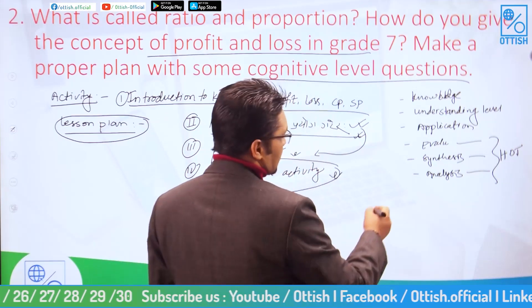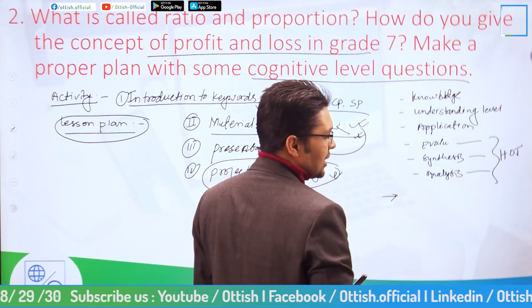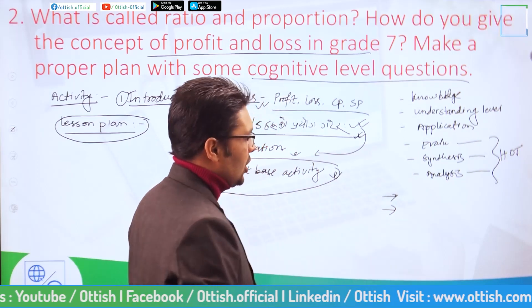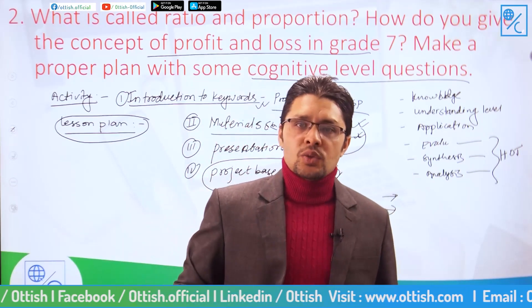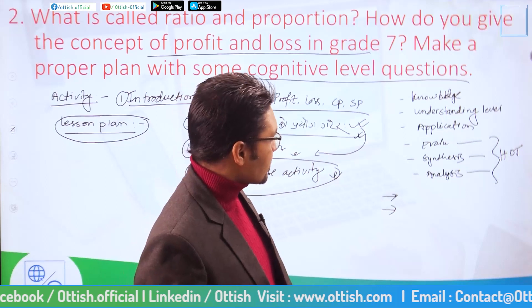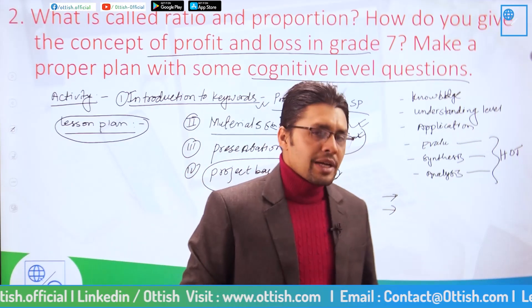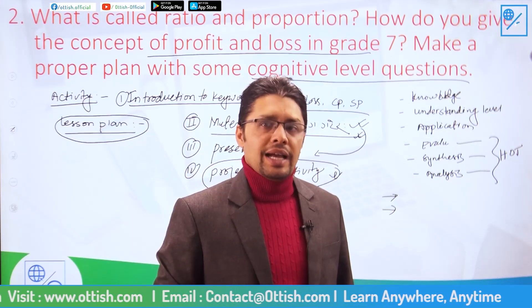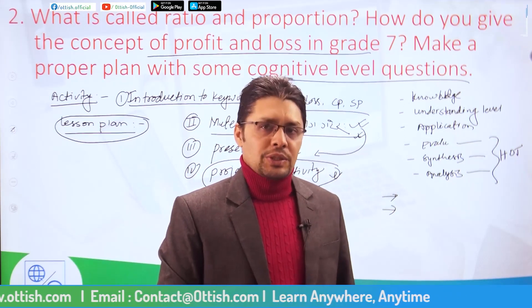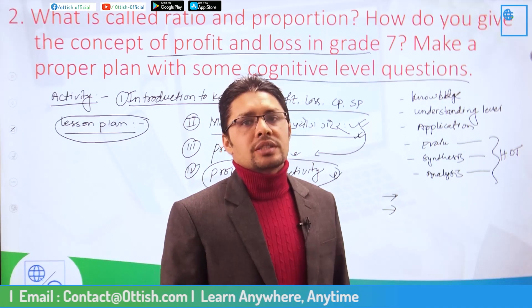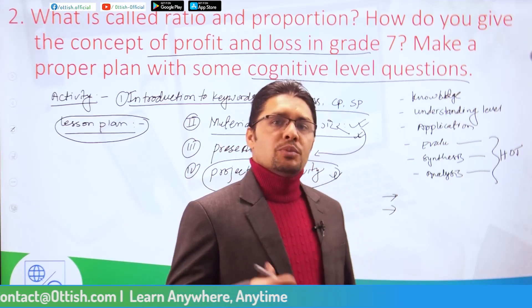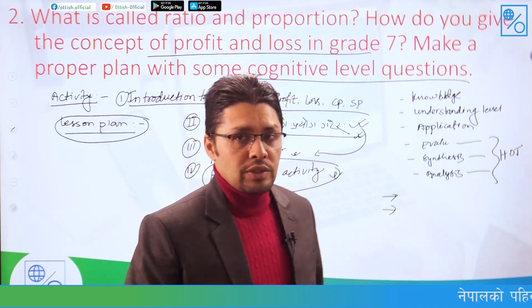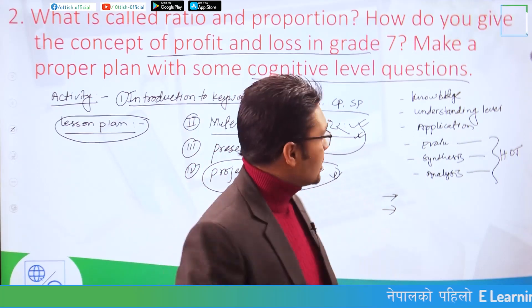For example: the formula for finding profit when cost price and selling price are given — that is knowledge level. A question like 'if you buy at 100 and sell at 50, how much is the profit or loss?' requires knowing the formula and calculating — that is the understanding level.